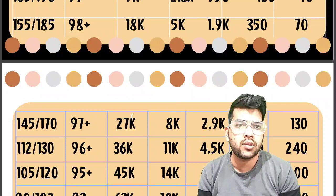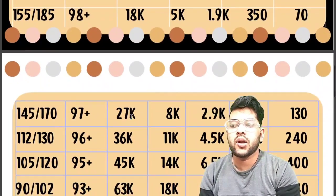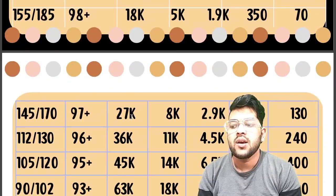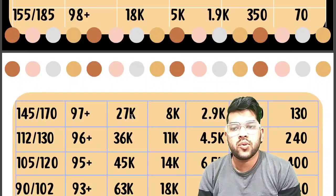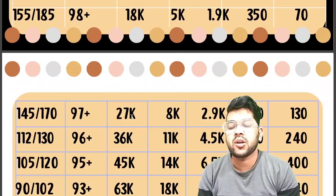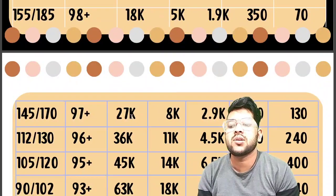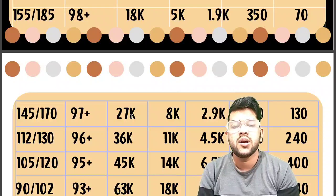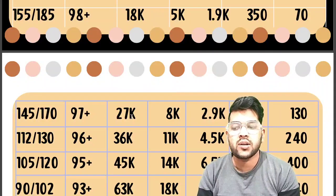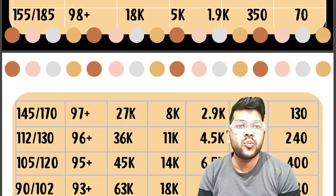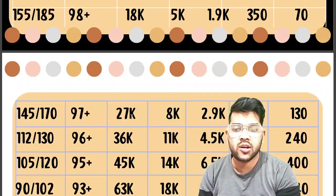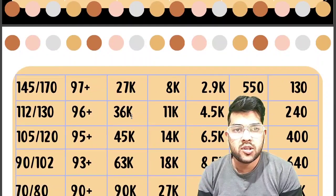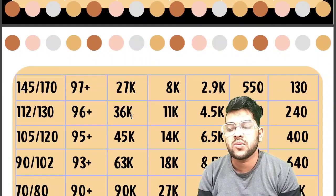For 93+ percentile, 90 marks for the first attempt and 102 marks for the second attempt will be required. The corresponding ranks are: General 63,000, OBC 18,000, EWS 8,500, SC 1,600, ST 640.